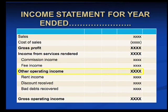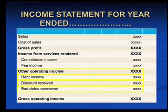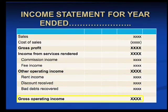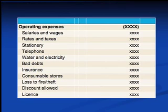As a reader of this financial statement, you can clearly see that your other operating income is made up of rent income, discount received, and bad debts recovered. These items have been discussed in prior lessons, so you know exactly where this information is coming from. All of this together gives us our gross operating income.